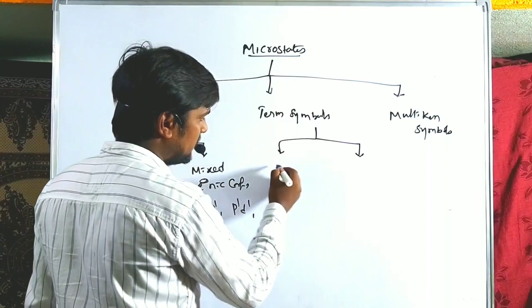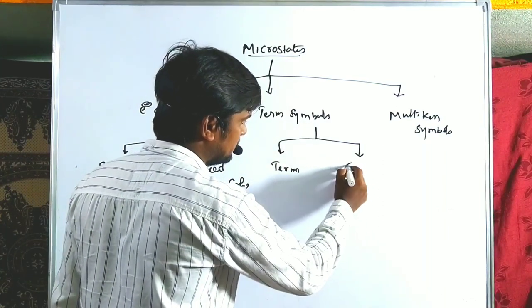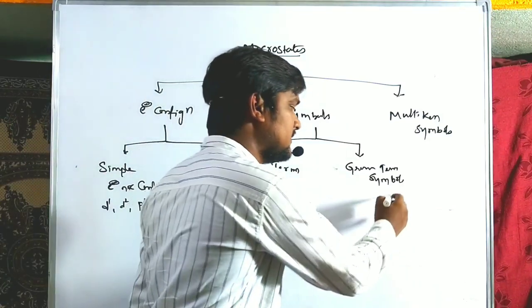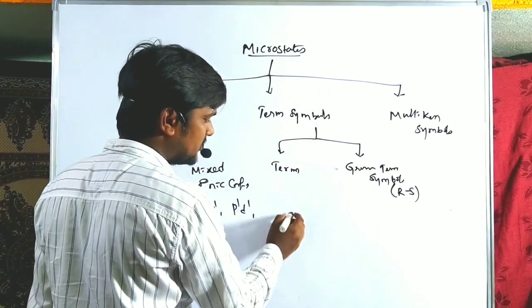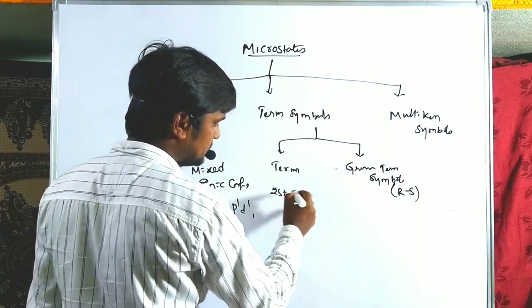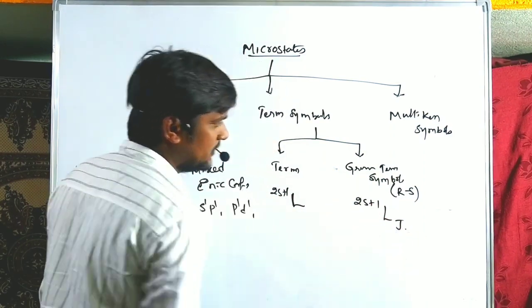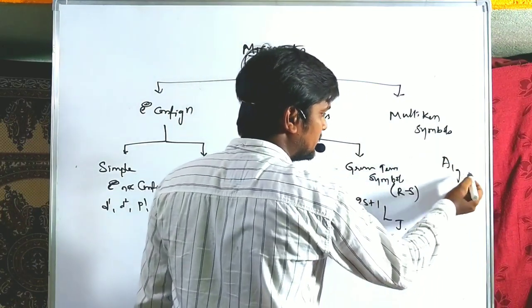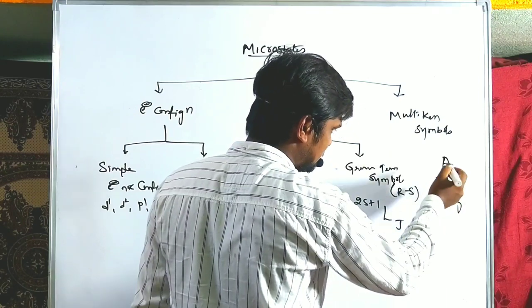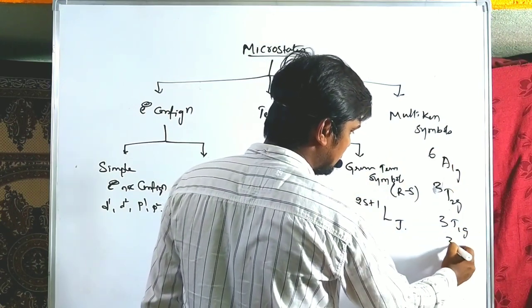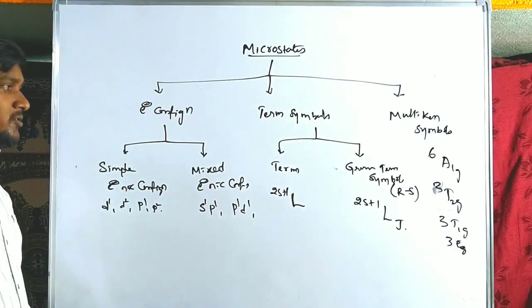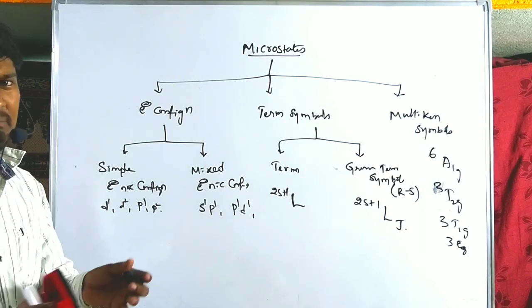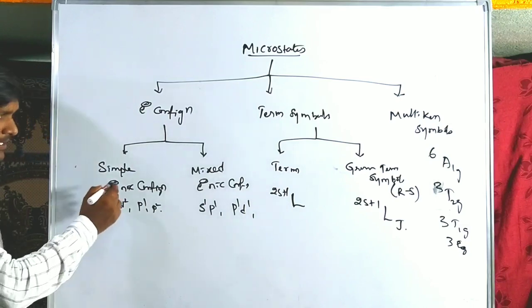Term symbols are also of two types: one without J value (2S+1 L), and the ground term symbol which includes J (2S+1 L_J) from Russell-Saunders or spin-orbit coupling. Mulliken symbols used in group theory include terms like A1g, T2g, T1g, and Eg with multiplicity prefixes. A simple formula is used to calculate the number of microstates in each case.